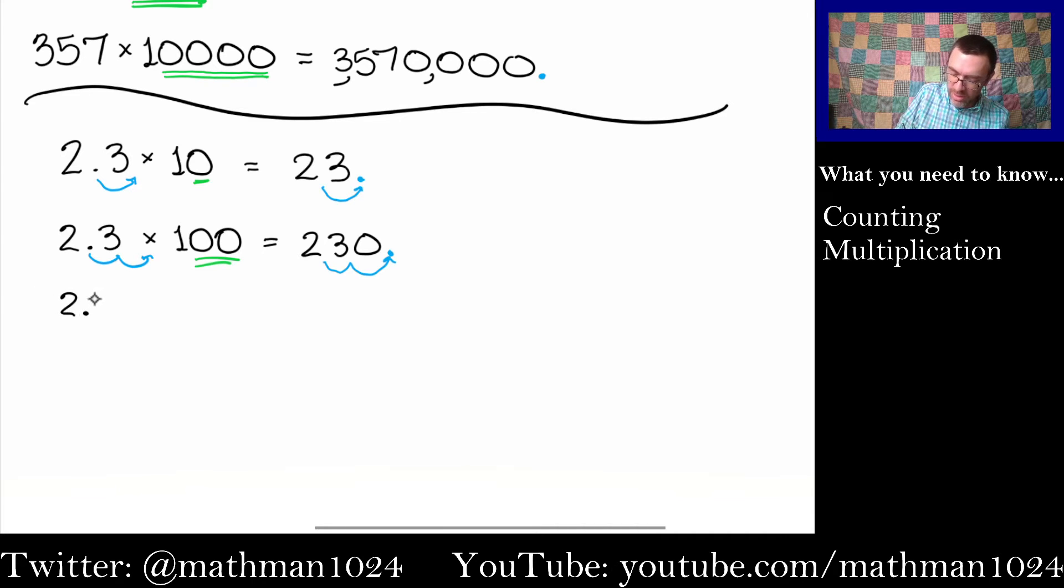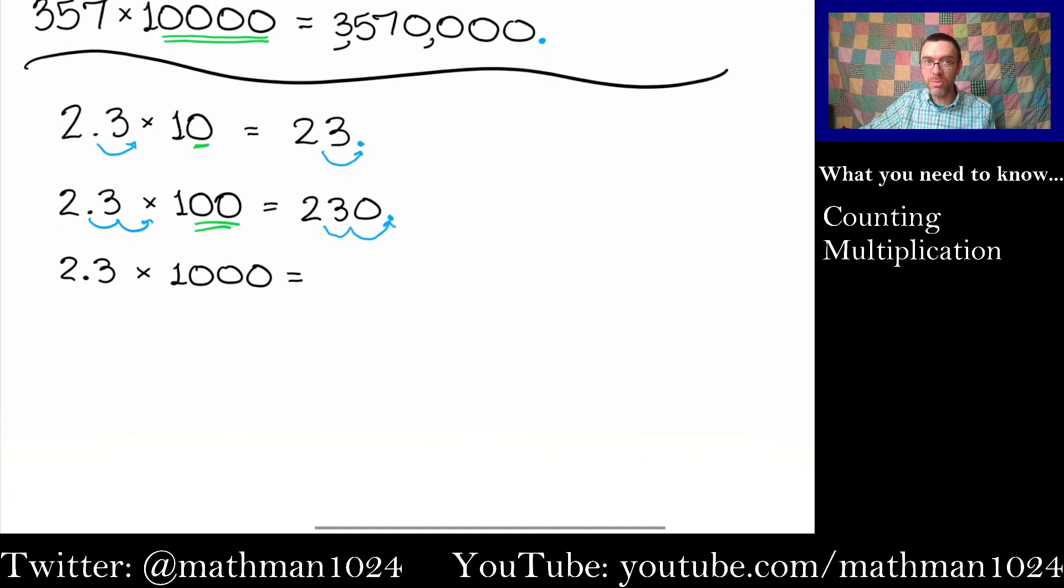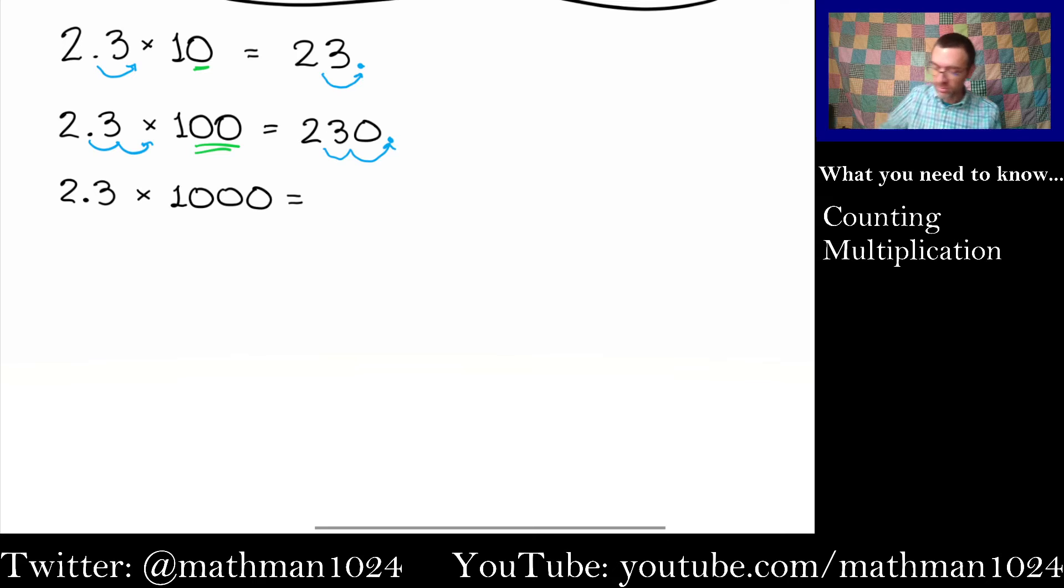I know you're catching on here. So what if I do 2.3 times 1,000. You count the number of zeros here. So we have 3, which means that this decimal has to move 3 places to the right. This would indicate 1 place to the right, 2, and that would be 3 places to the right. So it did start right here, but you went 1, 2, 3 places. So there doesn't have to be this big complicated thing here when we're multiplying times 10, 100, 1,000, and so on.